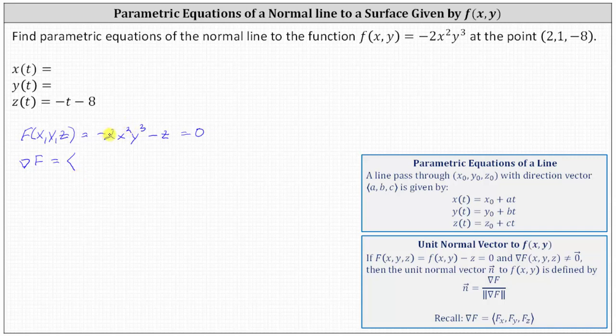We multiply by two and subtract one from the exponent on x, which gives us -4xy³, because we're treating y as a constant, and the derivative of z with respect to x is zero.